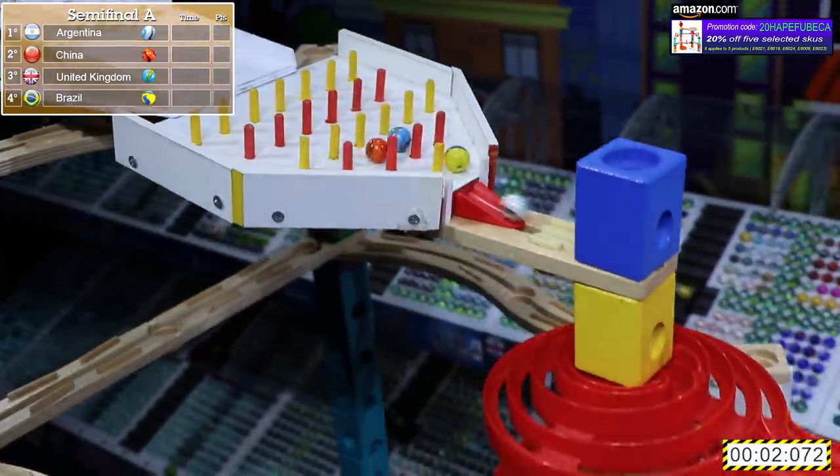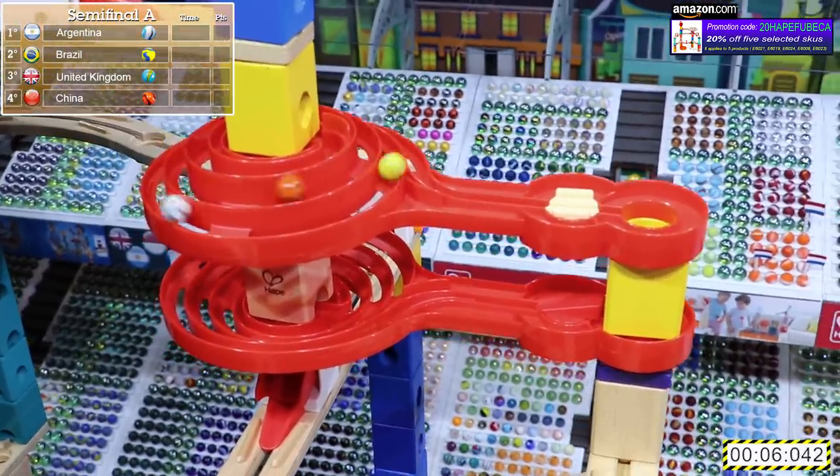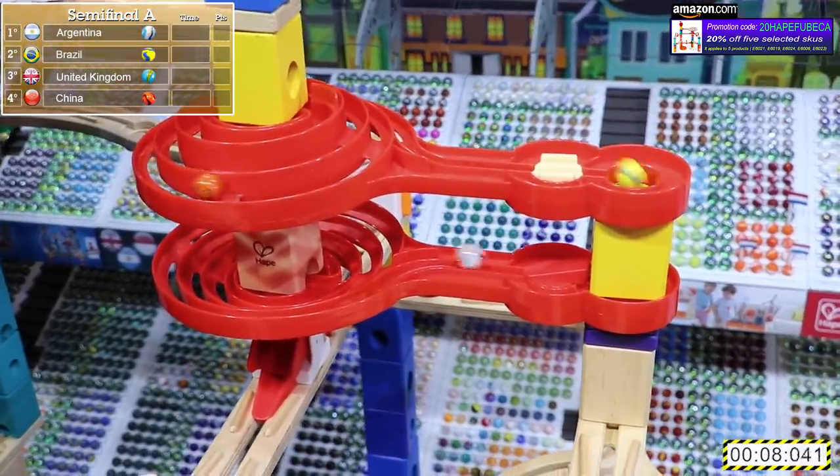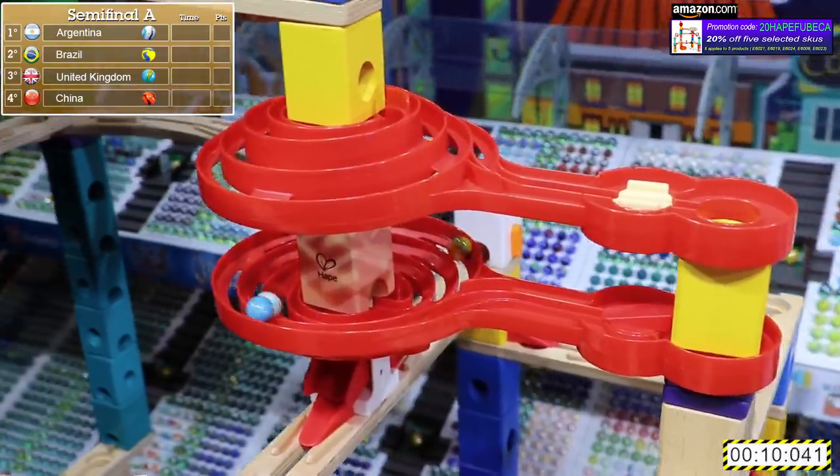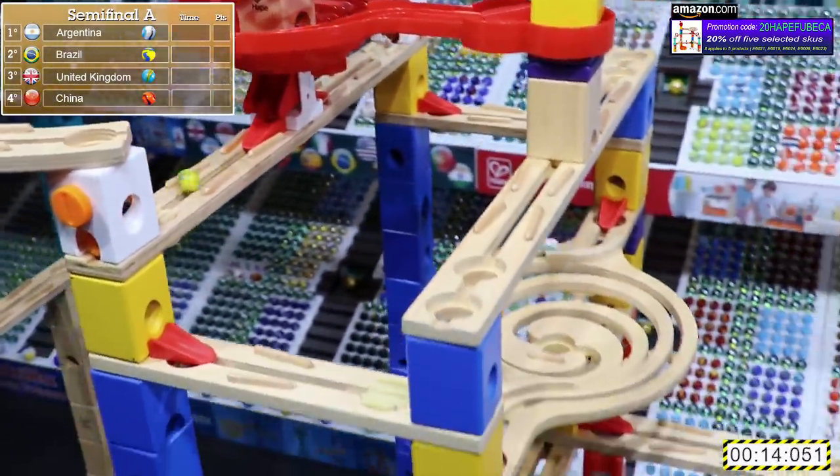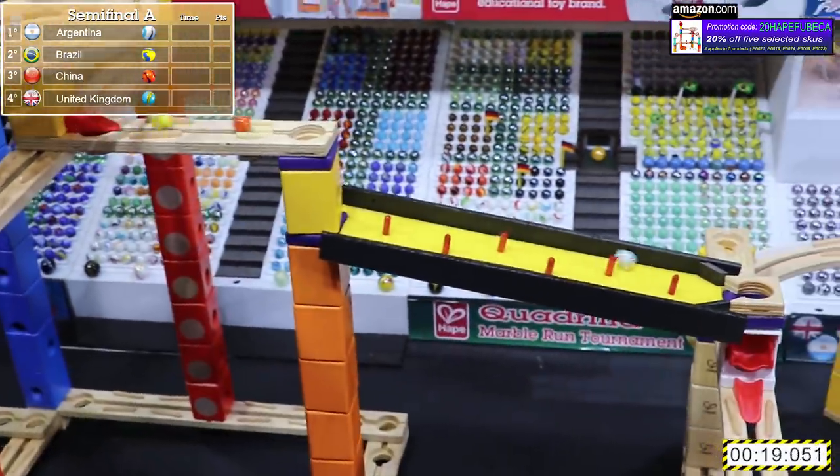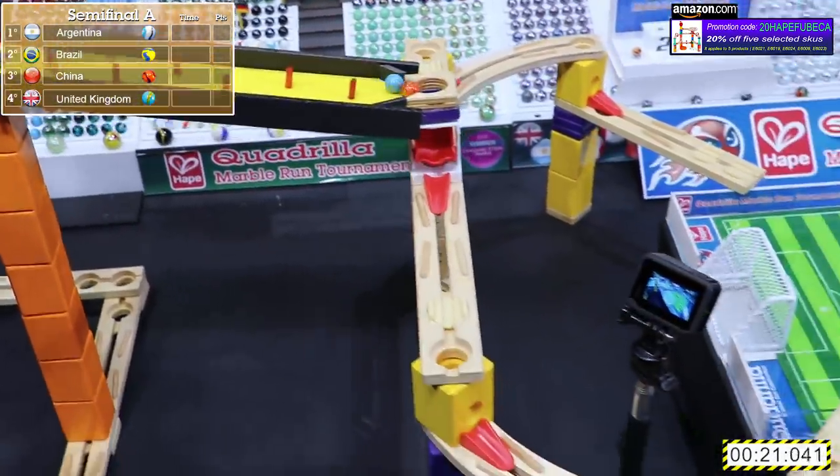First semifinal: Argentina, China, the UK, and Brazil. If it's Argentina or Brazil, we are in for a doozy at the end of this event. Right now Argentina is in the lead. They're followed right behind by Brazil. Then the UK and China. China a little bit further behind right now. It's a seemingly pretty big lead for Argentina. Let's see if they can continue that. They do, but they lost a little bit of time there.